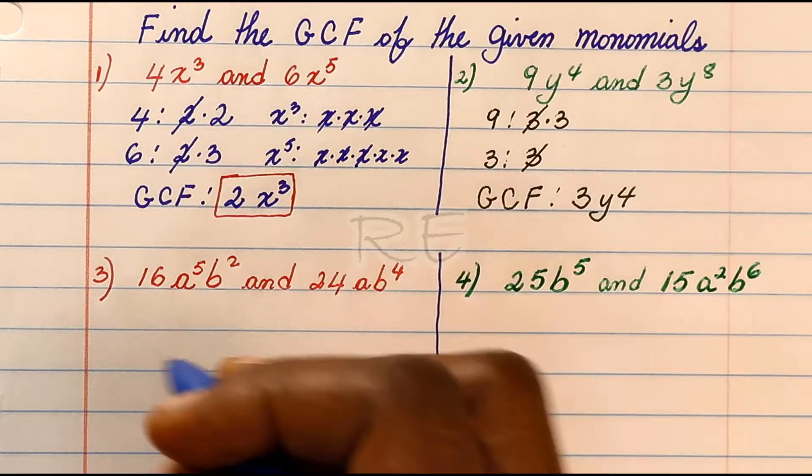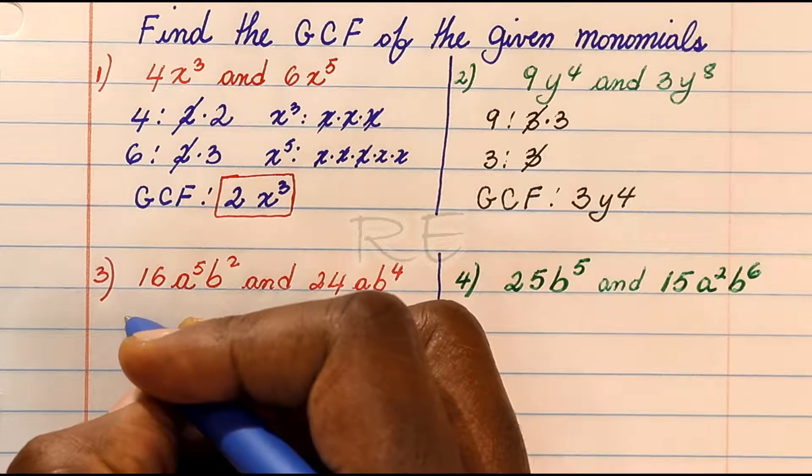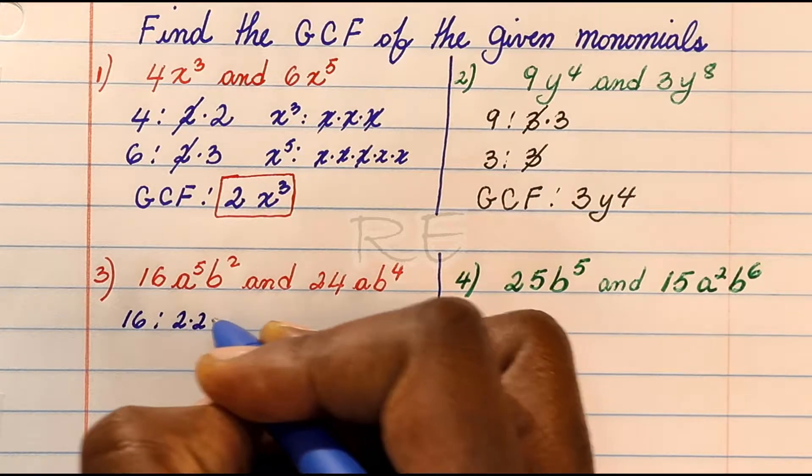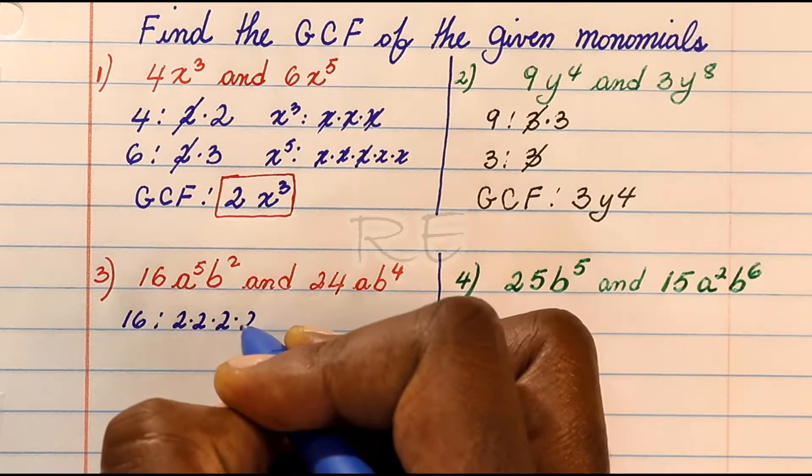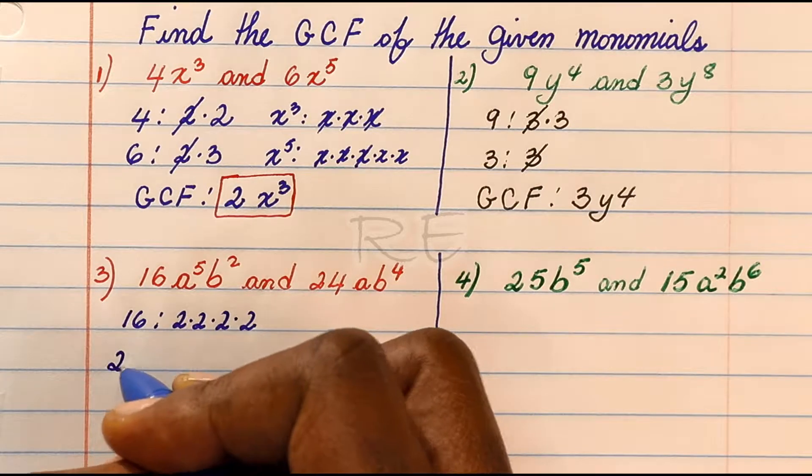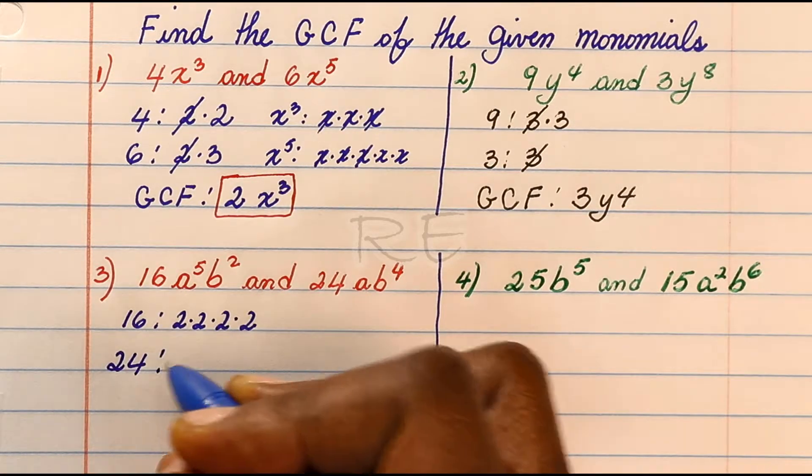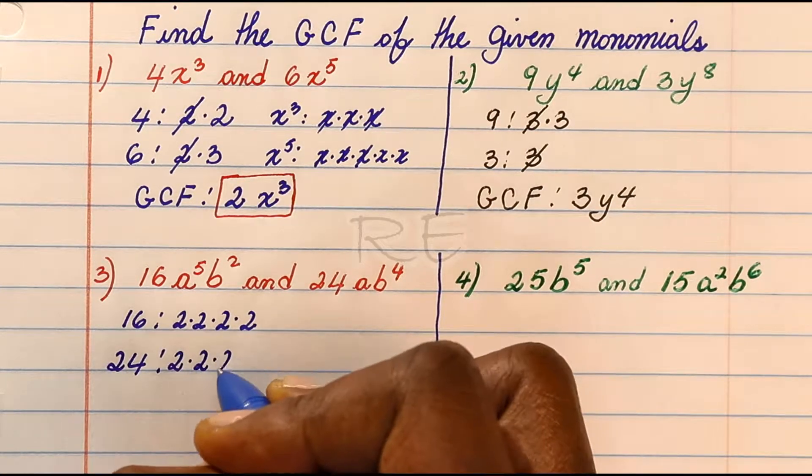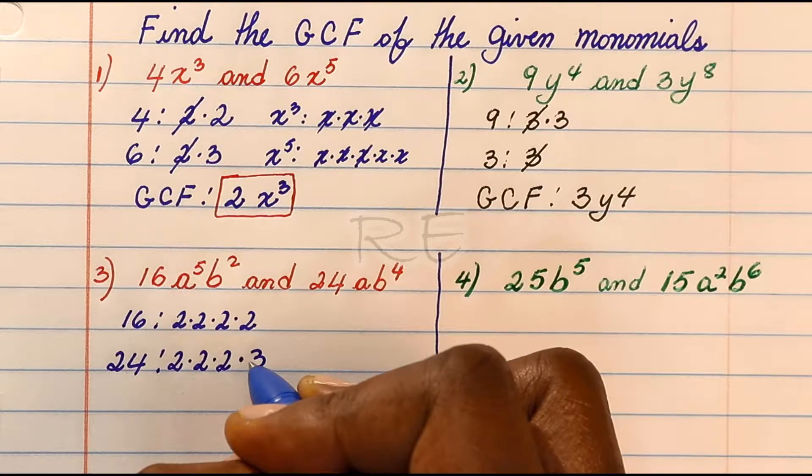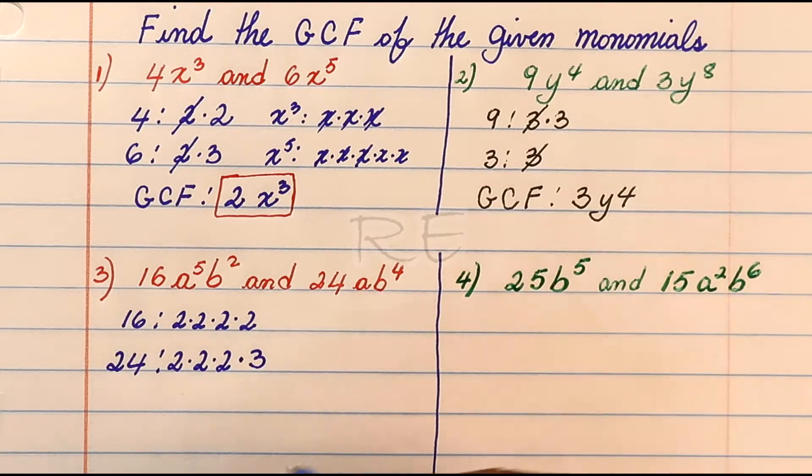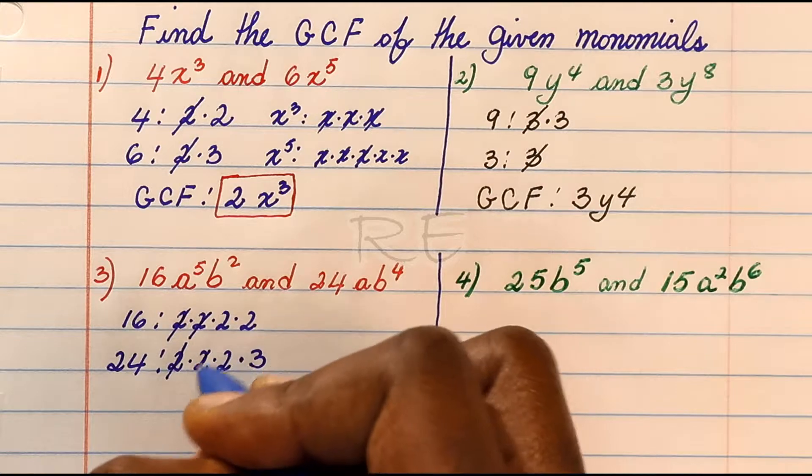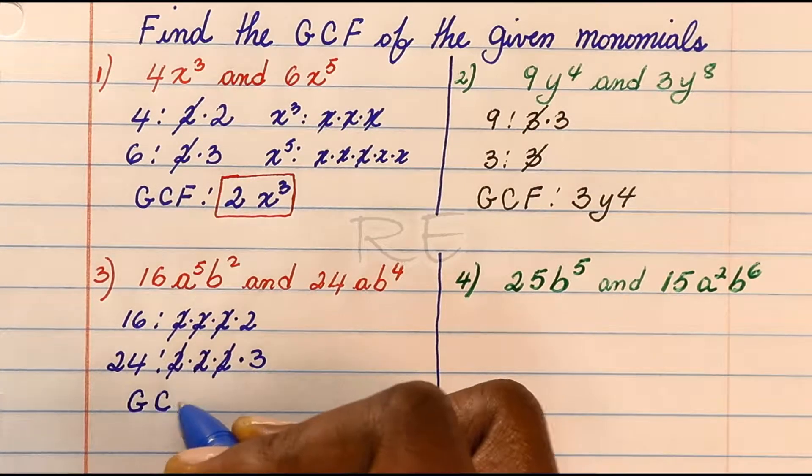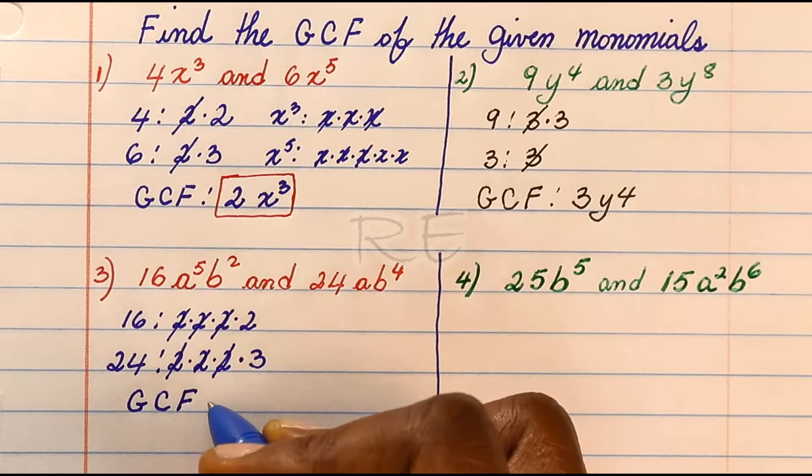Number 3. Between 16 and 24, 16 is 4 times 4, which is 2 times 2 times 2 times 2. And 24 is 8 times 3, so it's 2 times 2 times 2 times 3. The numerical GCF is 8, so the GCF is 2 times 2 times 2, which is 8.